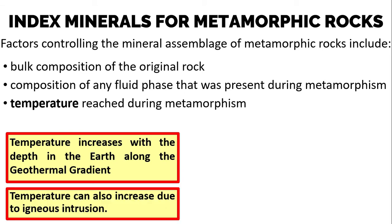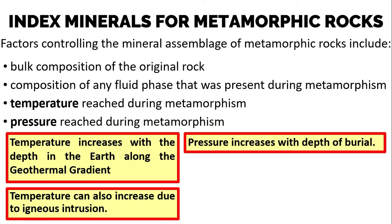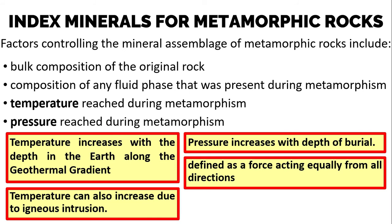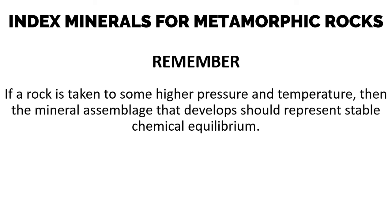Temperature can also increase due to igneous intrusion. Pressure increases with depth as well, so both pressure and temperature vary with depth in the Earth. Pressure is defined as a force acting equally from all directions — a type of stress called hydrostatic or uniform stress. If a rock is taken to higher pressure and temperature, the mineral assemblage that develops should represent stable chemical equilibrium, provided conditions are held long enough. Since metamorphism usually involves long periods of geologic time, most metamorphic rocks represent an equilibrium mineral assemblage.